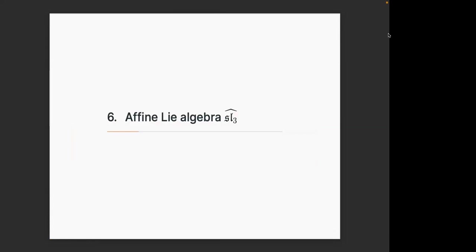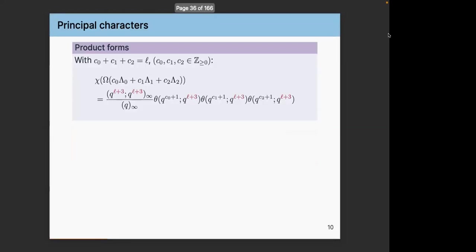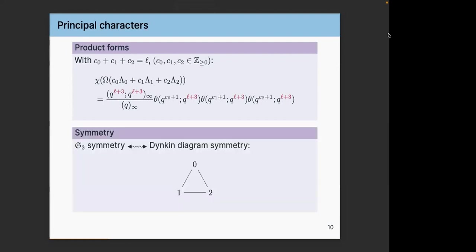Now let me talk about SL3-hat, the main protagonist of my talk. The principal characters in this case have a specific form. There are three nodes on the Dynkin diagram of SL3-hat, so you have three parameters C_0, C_1, C_2 to specify your integrable module. The characters are symmetric in C_0, C_1, C_2 due to the Dynkin diagram symmetry. The products have a periodic nature with period L plus 3 — level plus the dual Coxeter number. The modulus of these identities is L plus 3. The point is: what are the sum sides? The product form is immediate — you push a button and get the product. Sums are quite hard.